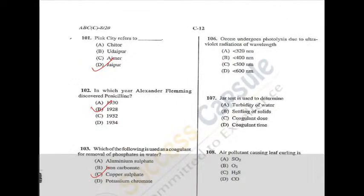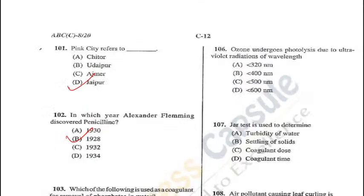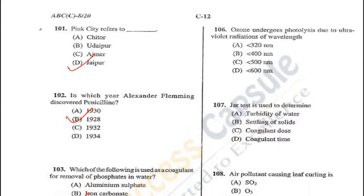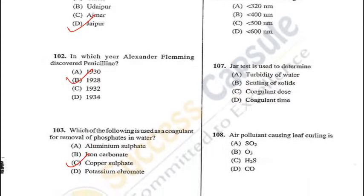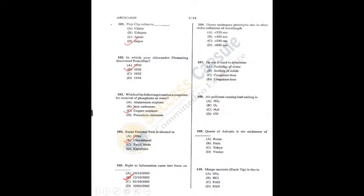Question 106: Ozone undergoes photolysis due to ultraviolet radiation of wavelength from 240 nm to 320 nm — A is the answer. Question 107: Jar test is used to determine turbidity of water — A is the answer. Question 108: The air pollutant which causes leaf curling is sulphur dioxide — A is the answer.